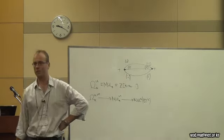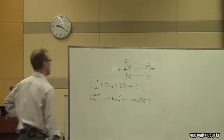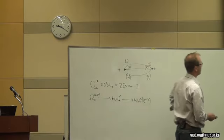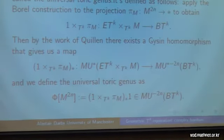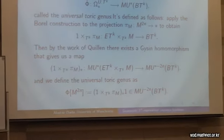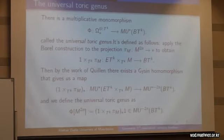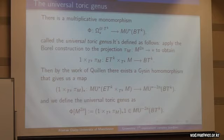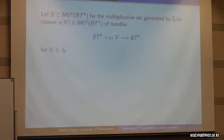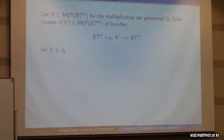There's another way to define this: you apply the Borel construction to the unique projection sending M to a point, getting a map, and then you can show this is complex oriented. So if you know the work of Quillen, we get a Gysin homomorphism which gives us a map changing degree by 2n, and we define this map as just the image of 1. It's the same map so you can choose whichever definition you like. We let S be the multiplicative set in the cobordism of BTK generated by the Euler classes of the bundles generated by non-trivial irreducible representations.